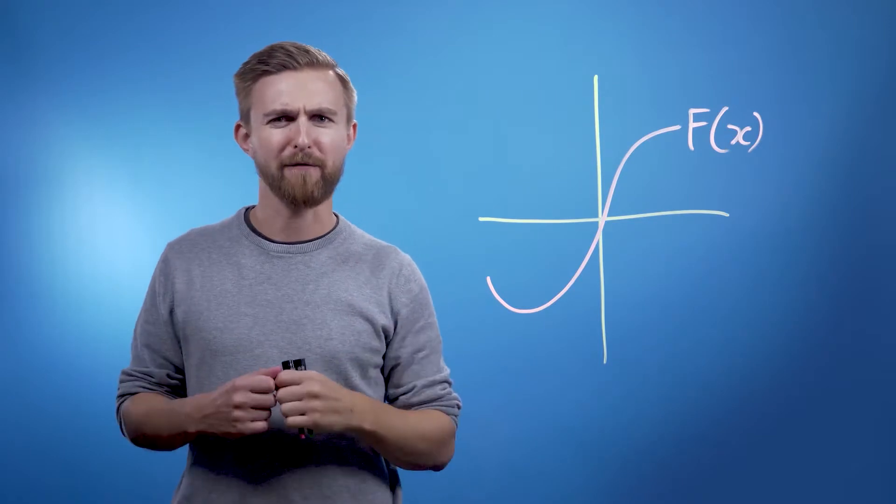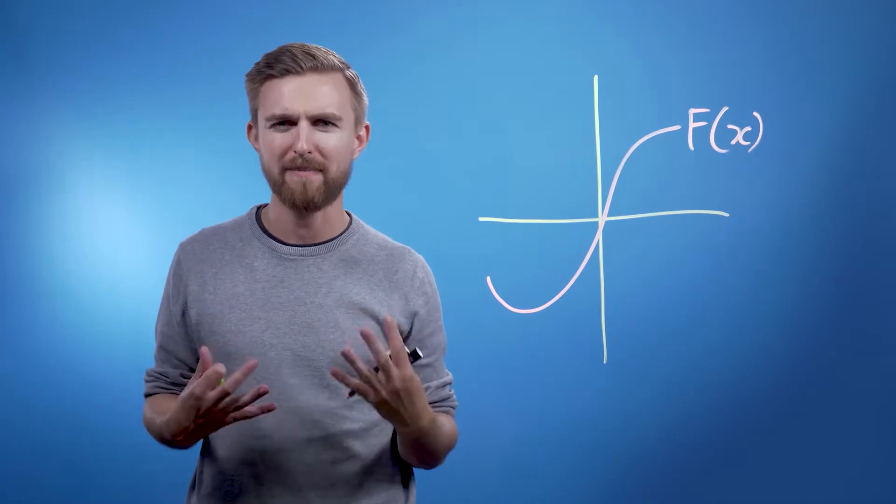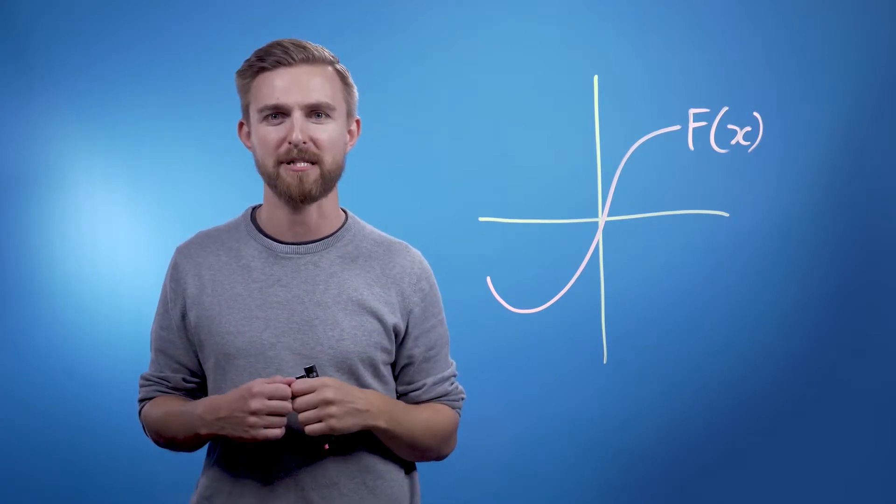I'm currently reading off an autocue which is reflected on a screen directly in front of the camera lens and automatically shows me the text at the appropriate speed.